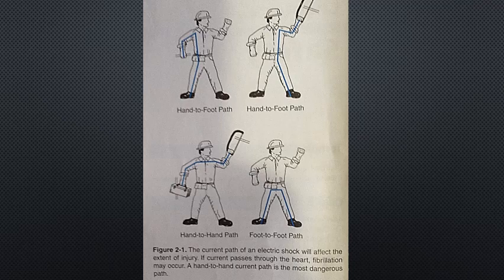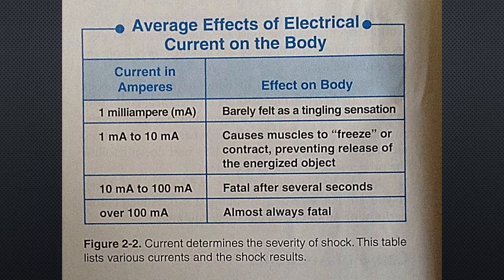Voltage does not have as much to do with shock severity as current does. Remember, 10,000 volts is no more dangerous than 120 volts. A current of 10 milliamps is painful and can have severe effects; a current of 100 milliamps is almost always fatal. The table in figure 2-2 shows the effects of various current levels.